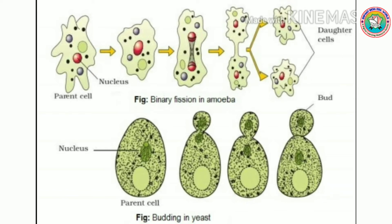Now take the example of yeast cells, which divide by budding — an asexual reproduction. In binary fission of amoeba, first the nucleus divides into two parts, then the cytoplasm divides into two parts. This means first karyokinesis takes place, then cytokinesis. In budding, a small constriction takes place in the yeast cells, which later develops into buds.